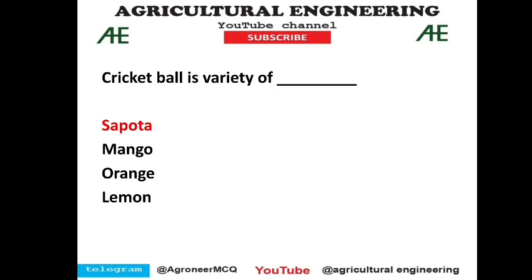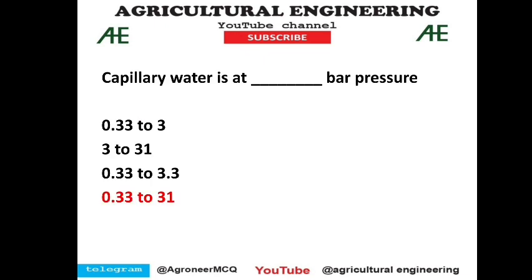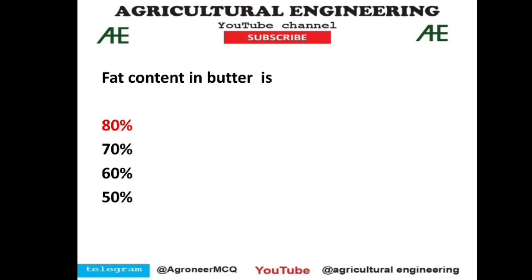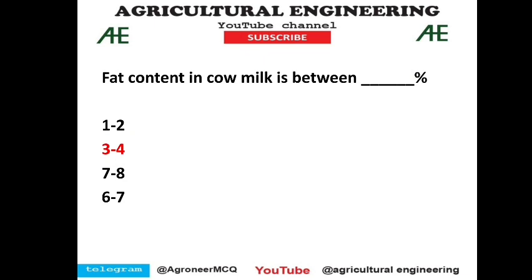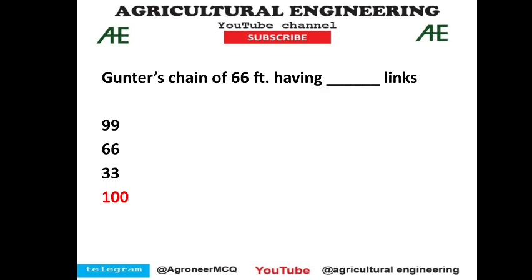Cricket ball is a variety of a supporter — a general science/general agriculture question. Capillary water is observed at 0.33 to 31 bar pressure — option 4 is correct. Fat content in butter is 80 percent. The fat content in cow milk is 3 to 4 percent — option 2 is correct.